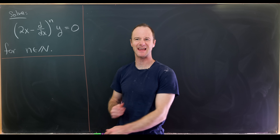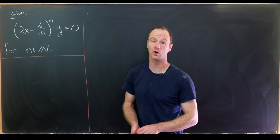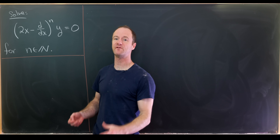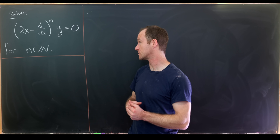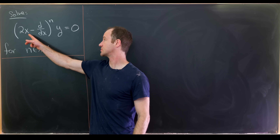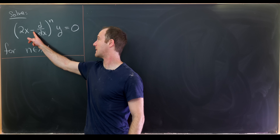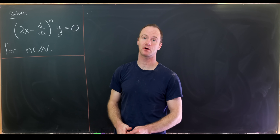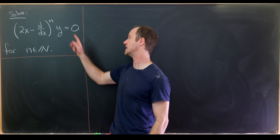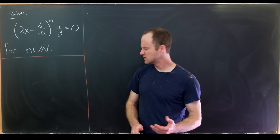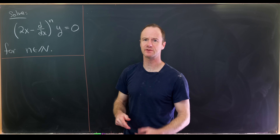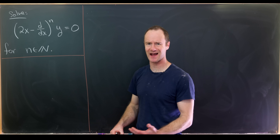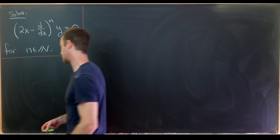Today we're going to look at a pretty interesting nth order linear differential equation. In particular, we'll find the most general solution of the differential equation (2x − d/dx)^n acting on y equals 0. In order to really understand what's going on here, let's wrap our heads around exactly what this notation means via some examples.